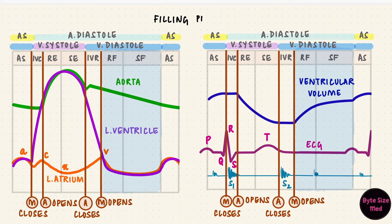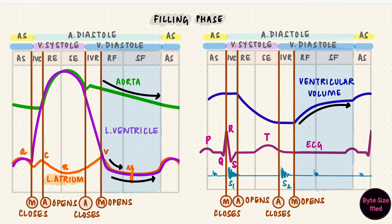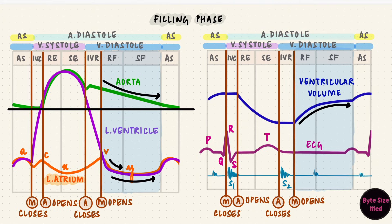Step six: filling of the ventricles. There's a rapid filling and a slow filling phase. The volume obviously increases in the ventricles as they fill, so that curve goes up. The atrial pressure reduces as they empty — that's the Y descent on the atrial pressure curve. The ventricular pressure stays low even though they're filling, because they're relaxing and compliant. The aortic pressure drops as blood runs off into the arterial system, but even at the end of ventricular diastole, the aortic pressure stays higher than the ventricular diastolic pressure due to the elastic recoil of the aorta.